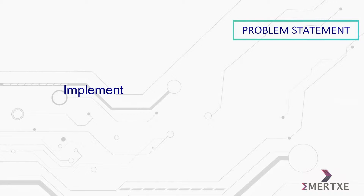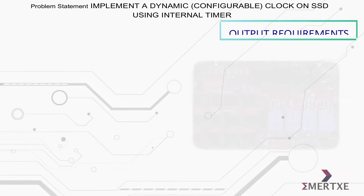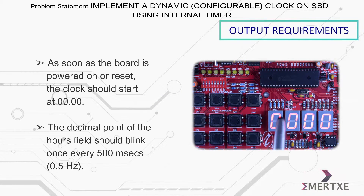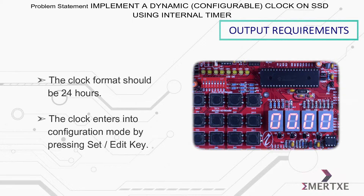In this assignment you have to implement a dynamic clock on SSD using an internal timer. As soon as the board is powered on or reset, the clock should start at zero. The decimal point of the hours field should blink once every 500 milliseconds, and the clock format should be 24 hours.